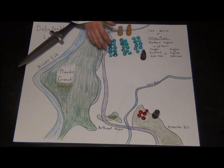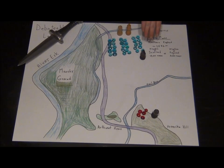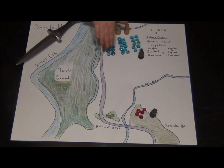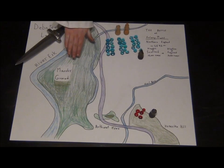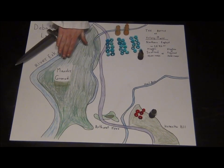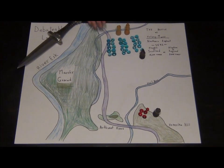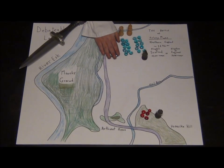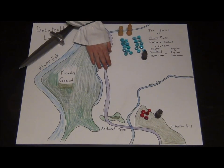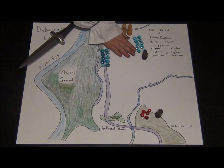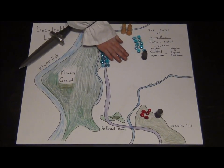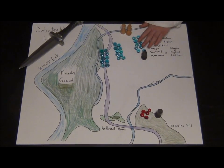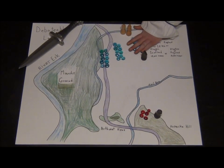Because of this disarray, the English cavalry was able to push the Scottish forces into the marshy ground near the River Ell. This is a representation of the Scottish forces being moved by the cavalry.